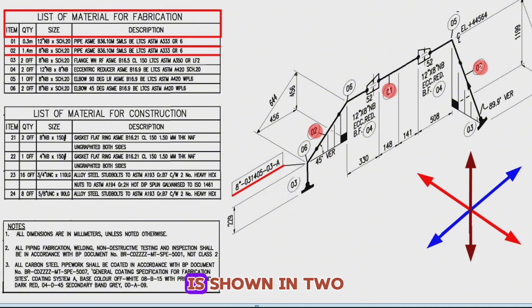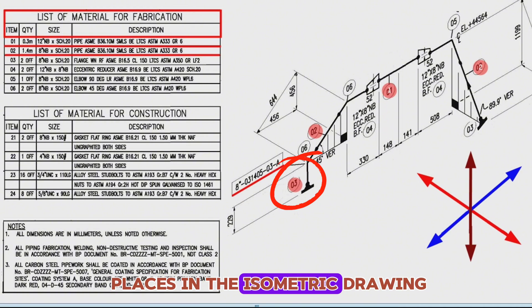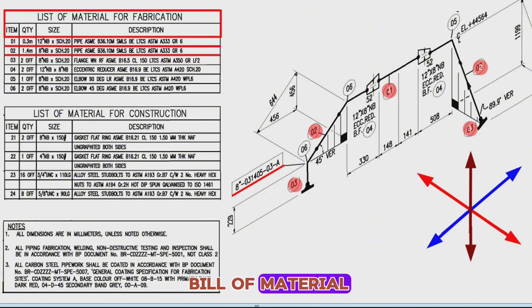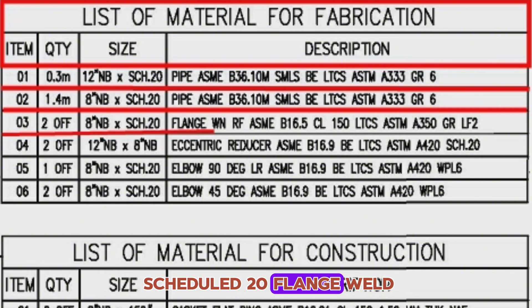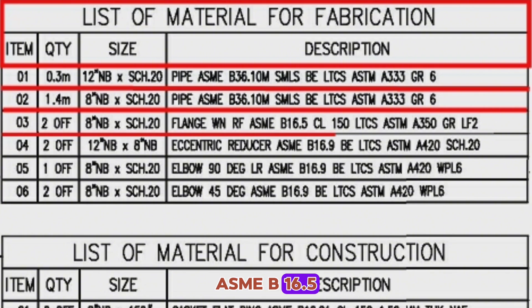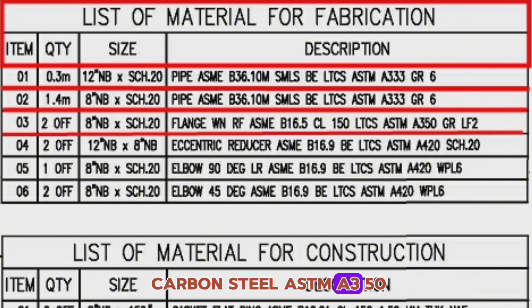Item number 3 is shown in two places in the isometric drawing. Let's look at the bill of material. Item 3, quantity is 2-off, size is 8-inch NB, schedule 20, flange weld neck raised-face ASME B16.5, class 150, low-temperature carbon steel, ASTM A350.